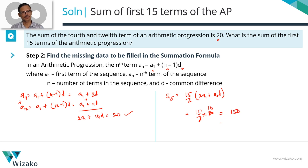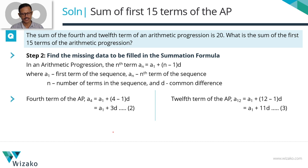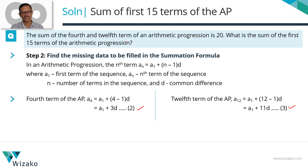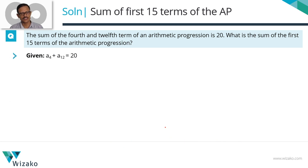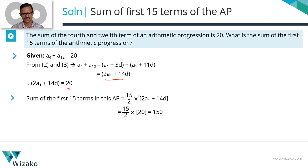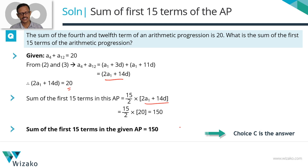To quickly summarize the textbook approach: we computed A4 in terms of A1 and d as A1 plus 3d, and A12 as A1 plus 11d. Their sum gives 2A1 plus 14d equals 20. The summation formula is 15 by 2 times 2A1 plus 14d, which equals 15 by 2 times 20, giving 150. Choice C is the correct answer.